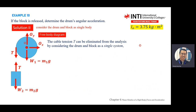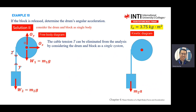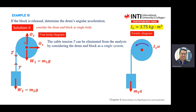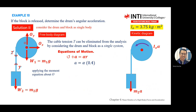For Solution 2, I consider it as one single body. I combine the tension so there are no internal cable forces. I join the two T's together and treat everything as one body. Looking at this single system: the mounting is at the center, the block A is pulling down, and the whole system rotates at I times alpha.